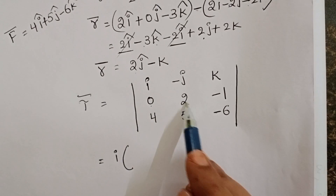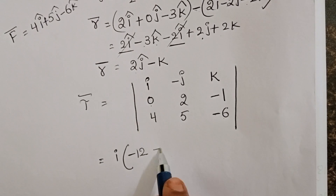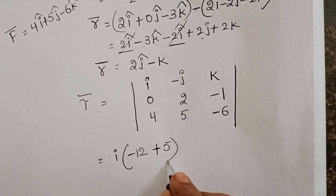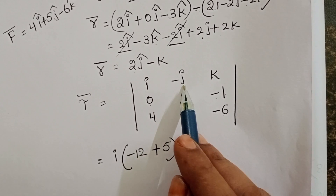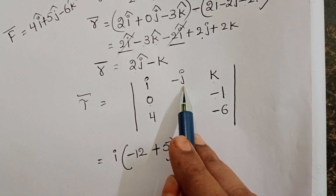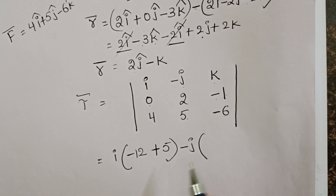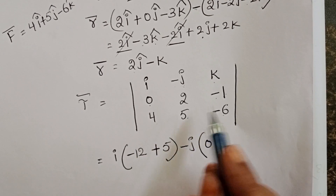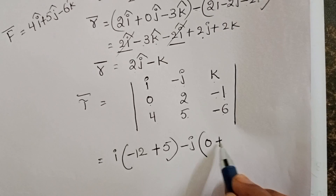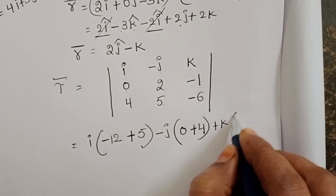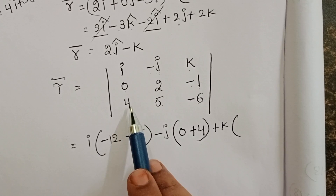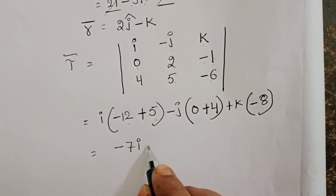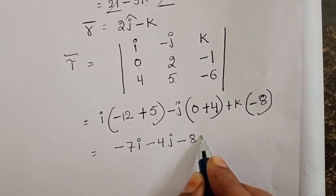Computing the cross product: i component: (2)(-6) - (-1)(5) = -12 + 5 = -7. Note the negative sign for the j component because of the cofactor rule. j component: -[(0)(-6) - (-1)(4)] = -[0 + 4] = -4. k component: (0)(5) - (2)(4) = 0 - 8 = -8. So the result is -7i - 4j - 8k.